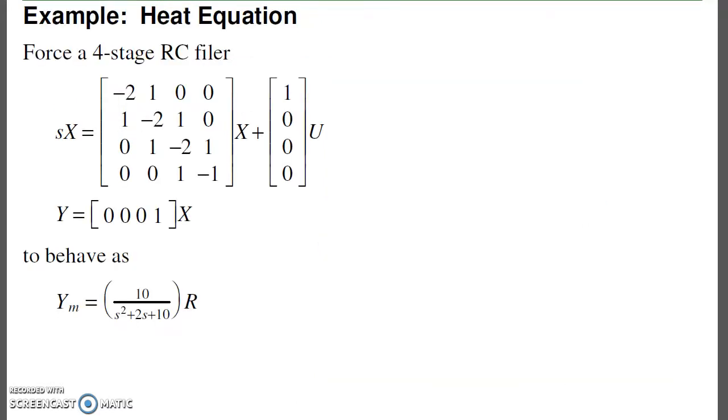To illustrate this, let's give it a challenge. Let's take a fourth order heat equation. This is a system that behaves very slowly, and try to make it behave like an underdamped system with a settling time of four seconds, dominant pole at minus one plus minus j three. The heat equation doesn't want to behave this way, but let's see if LQR methods can do it.